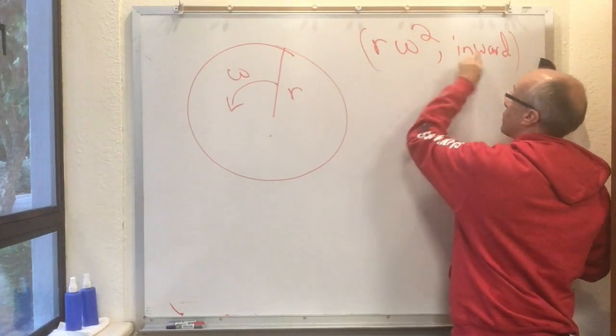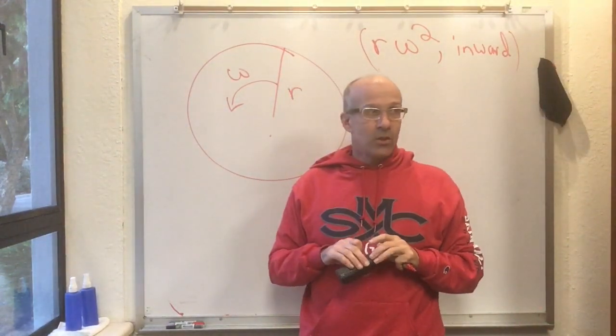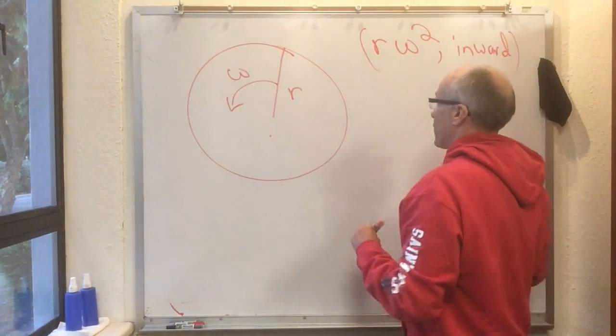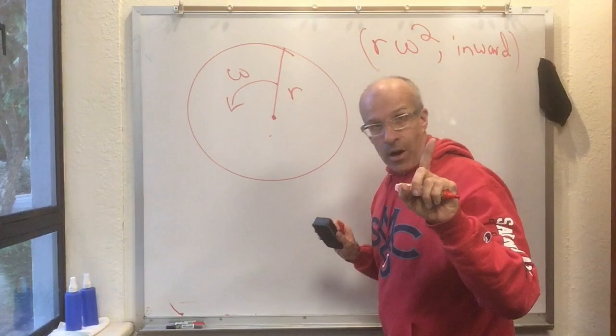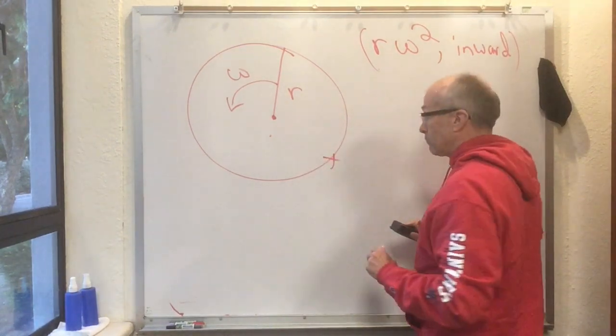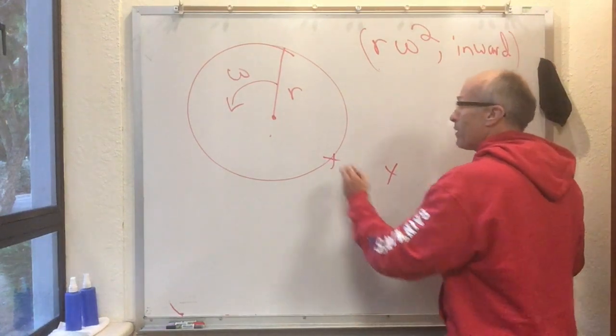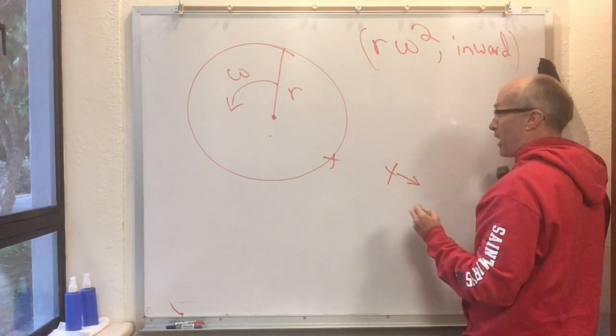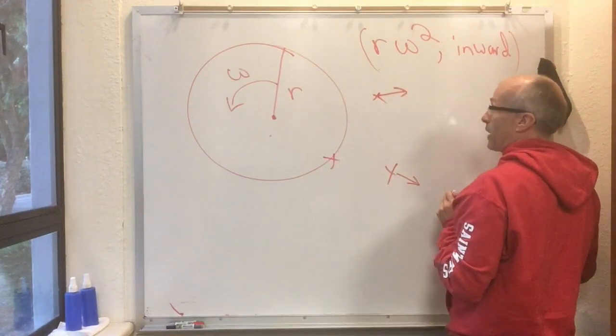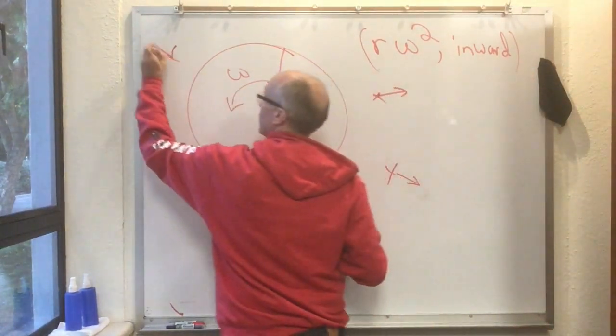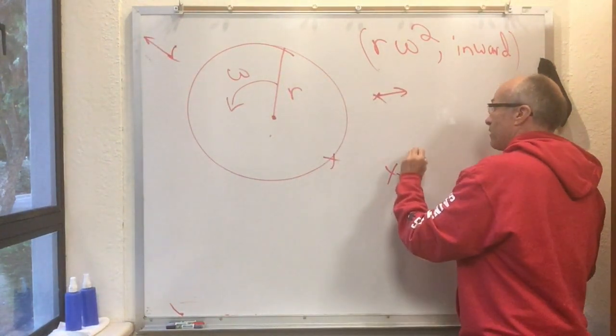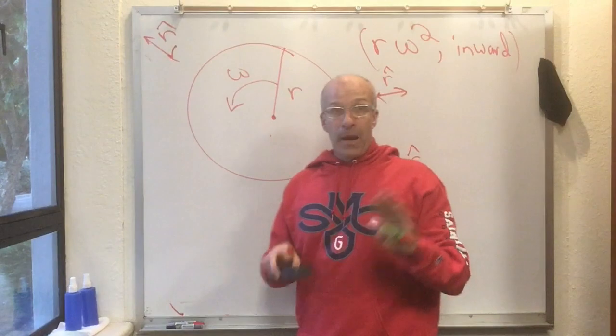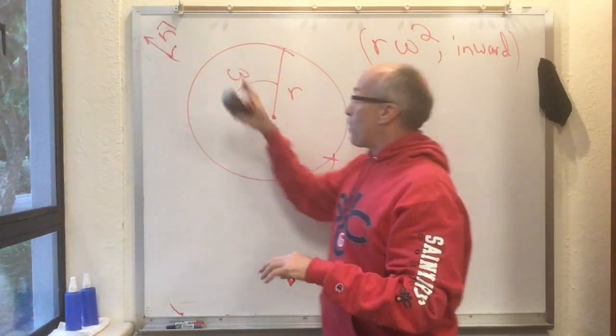Now, it's not very satisfying to write a vector like that, so I'm going to introduce an insanely great new coordinate system. Wherever you are, there's going to be a unit vector that points outward. That means if I'm over here, I've got a unit vector pointing that way. If I'm over here, pointing that way. Wherever I'm at, I will call that unit vector r-hat.